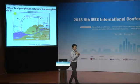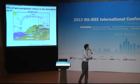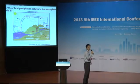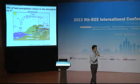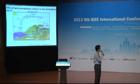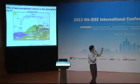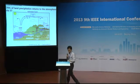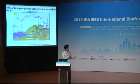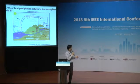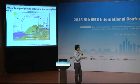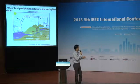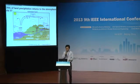Roughly 70 percent of land precipitation returns to the atmosphere through evapotranspiration. The red square shows land precipitation at global scale — 113 units — and evaporation is roughly 73, so it is roughly 70 percent.